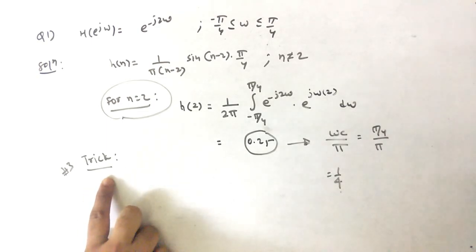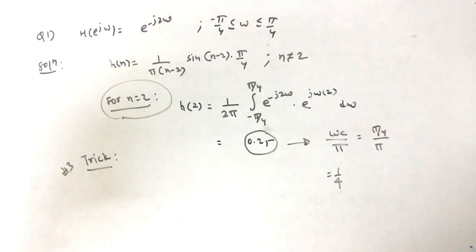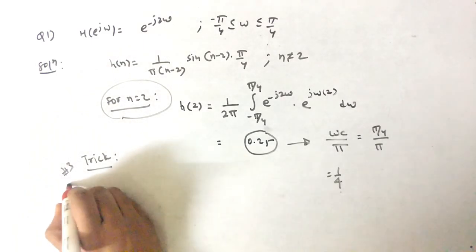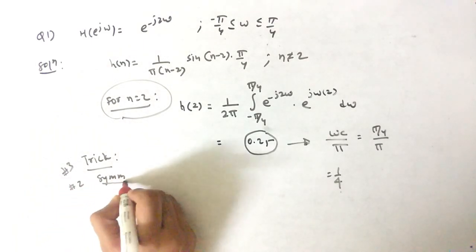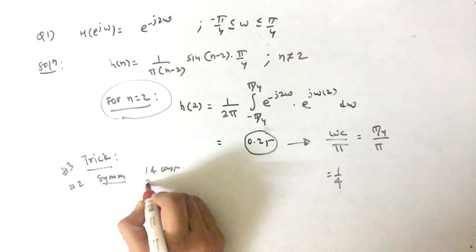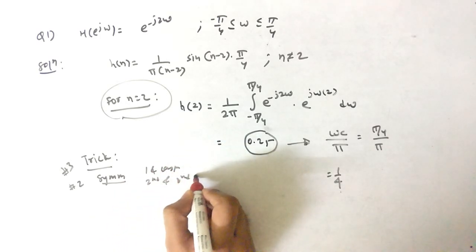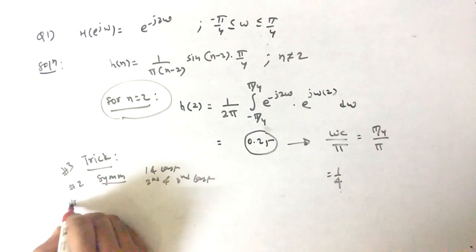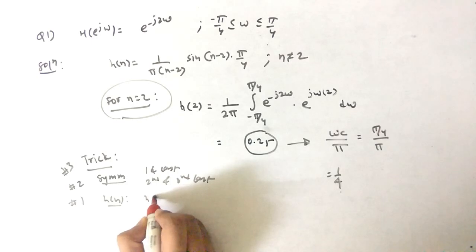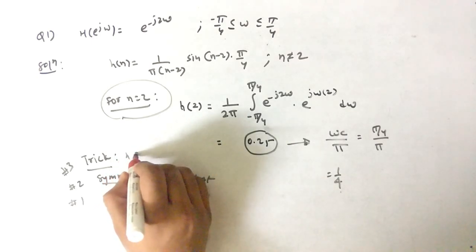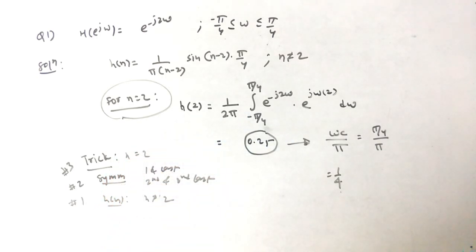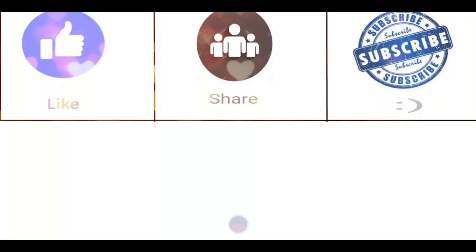To summarize: Trick #1 is the direct h(n) formula when n ≠ 2 (the center). Trick #2 is the symmetric property — first and last are the same, second and second-last are the same, and so on. Trick #3 is for the center value: h(α) = ωc/π. If you liked this video, do like, share with your friends, and subscribe to my YouTube channel. See you in the next video — take care, this is Shrenik Jain, peace out.